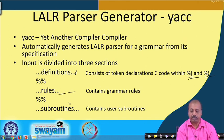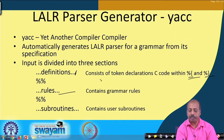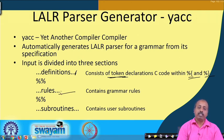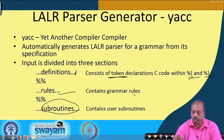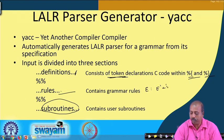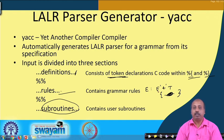In the rules section we can write grammar in terms of terminals and non-terminals. Tokens declared in the definitions section are treated as terminals; other symbols are treated as non-terminals. The third part, the subroutines section, contains additional C routines needed by the actions associated with the grammar rules — for example, a rule like E producing E plus T with a corresponding action that may need additional C routines.